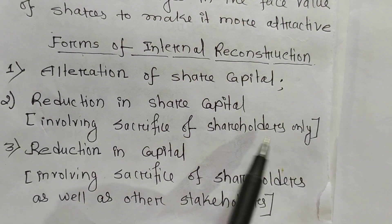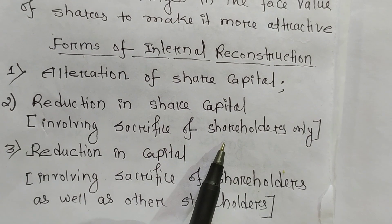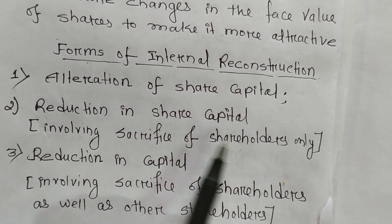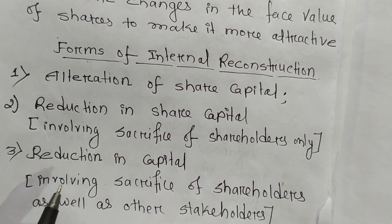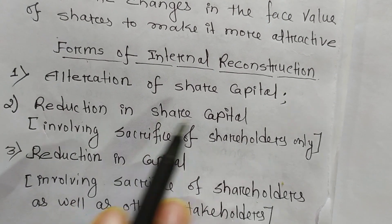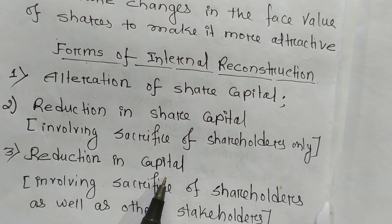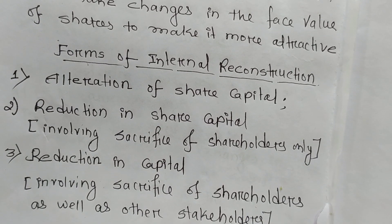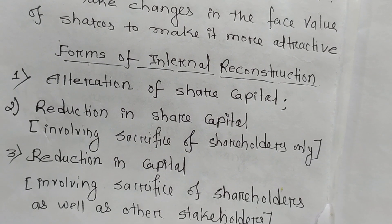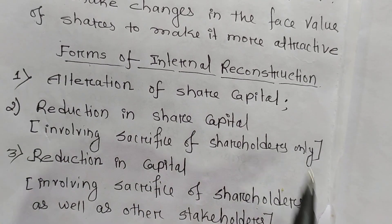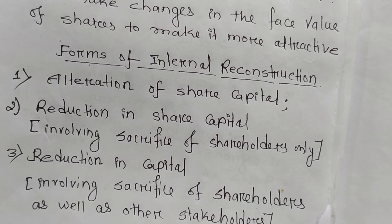Reduction in share capital involves sacrifice by shareholders only — that means equity shareholders and preference shareholders — and not by debt holders. The third form is reduction in capital, where the reduction involves sacrifice by shareholders as well as other stakeholders such as creditors or debtors. So these are the three forms through which internal reconstruction can be carried out.